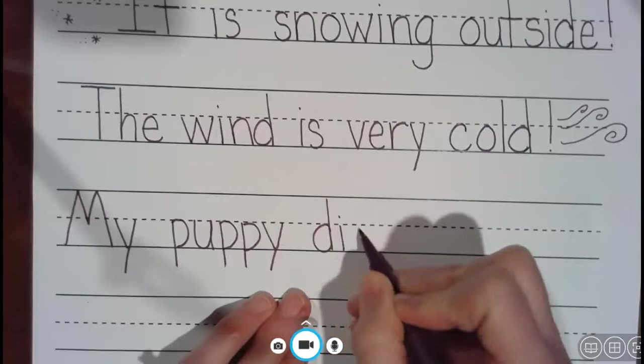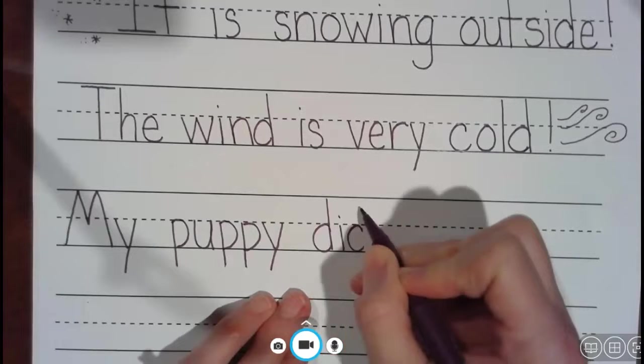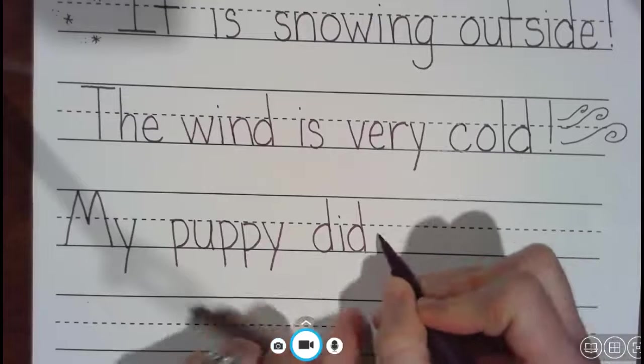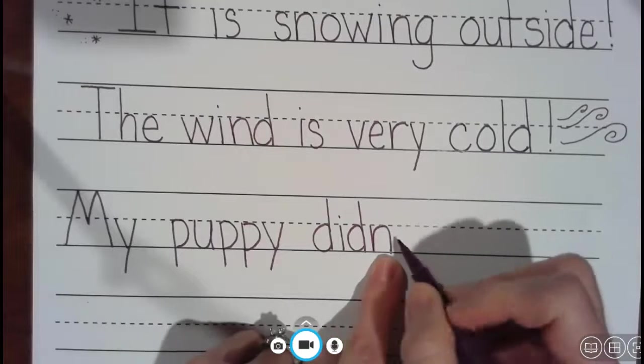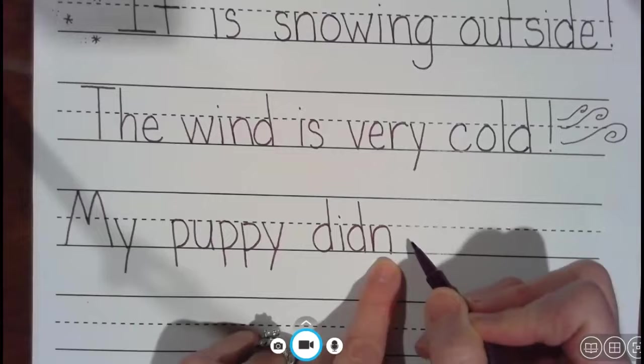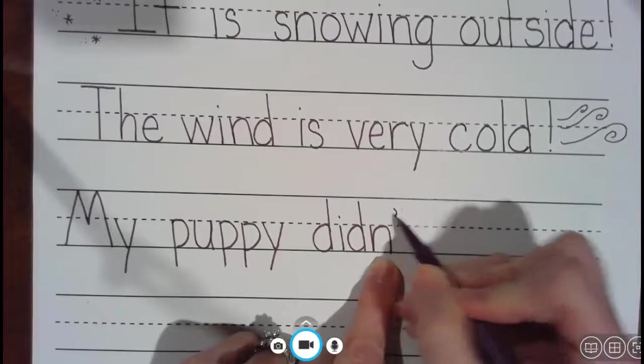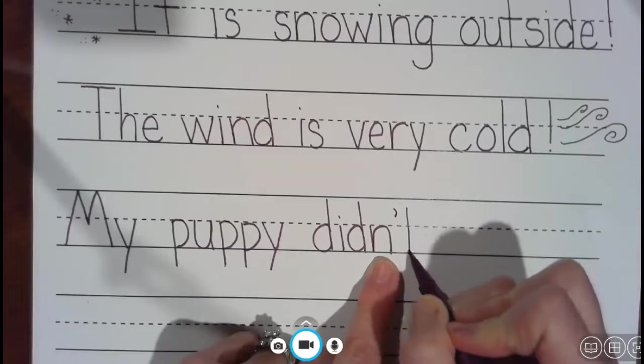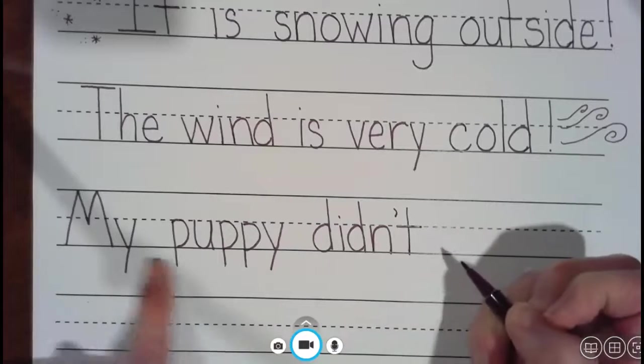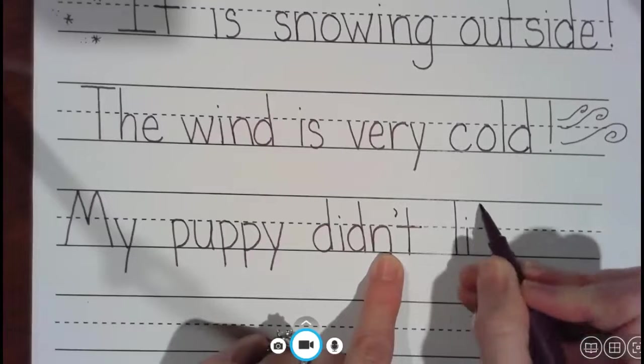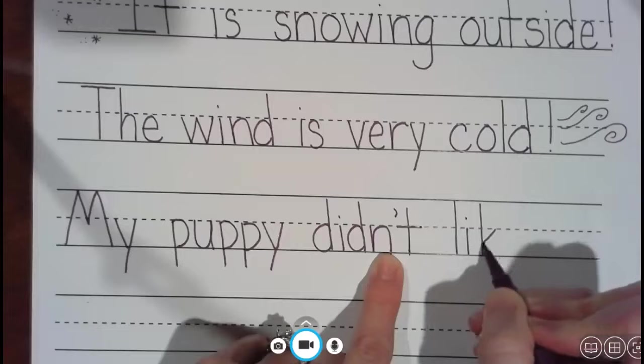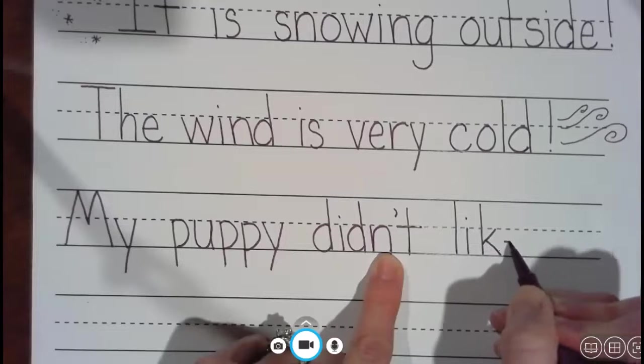My puppy didn't, or you could say did not. Didn't and did not mean the same thing. And when we do it, we leave out the O for did not, and so we put an apostrophe and then we put a T. My puppy didn't like it, L-I-K-E.